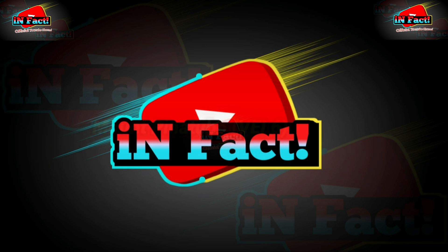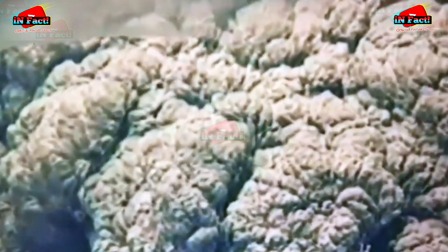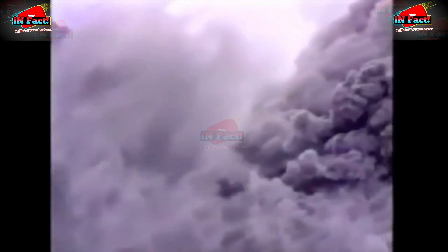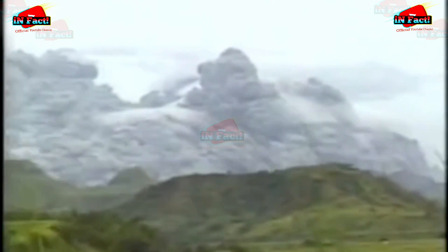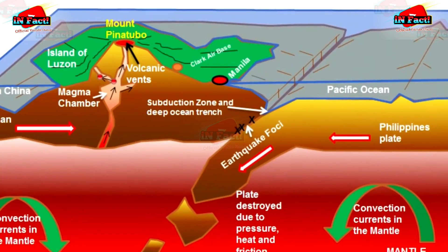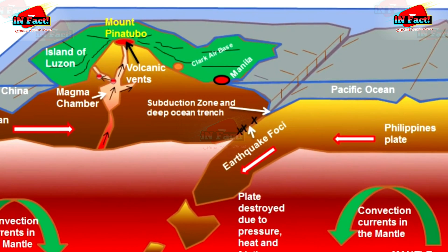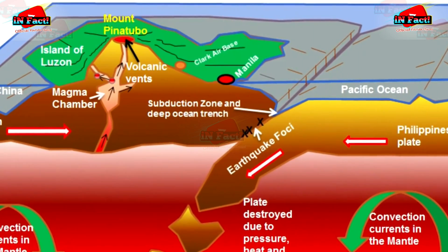Number four: Mount Pinatubo, VEI 6. One of the volcanoes in the Philippines released a massive VEI-6 scale explosion. Mount Pinatubo ejected 5.5 cubic kilometers of material into the air, and volcanic ash rose as far as 35 kilometers. The ash fell all around the countryside, damaging several residents' houses. The massive explosion caused global temperatures to drop by 0.5 degrees Celsius, and also spewed millions of tons of sulfur dioxide and other particulate matter into the air.